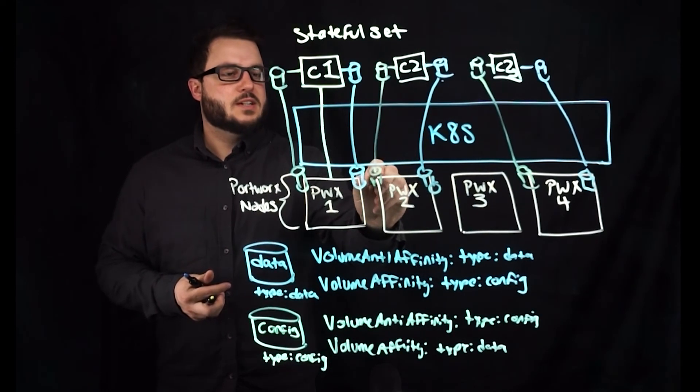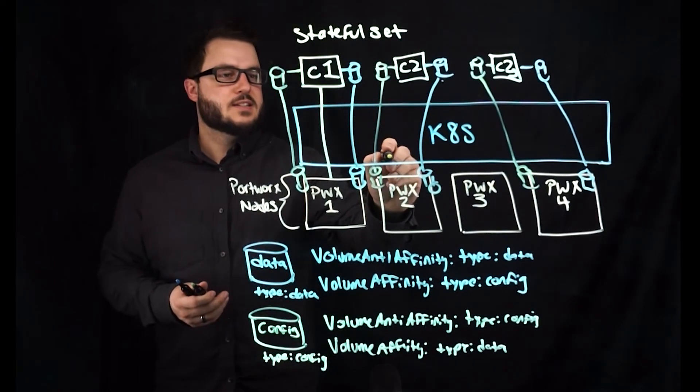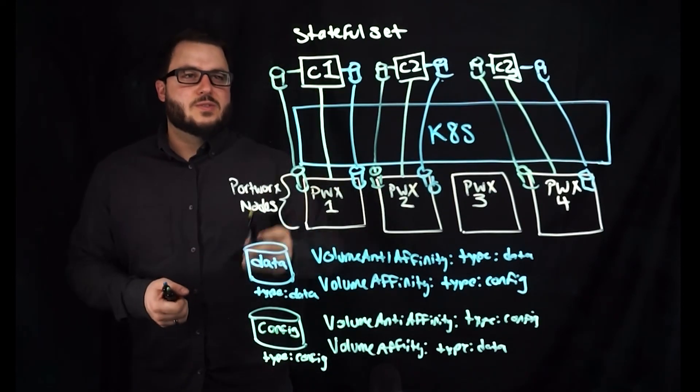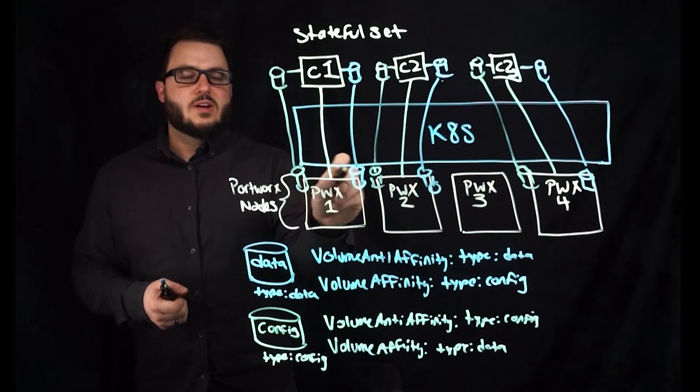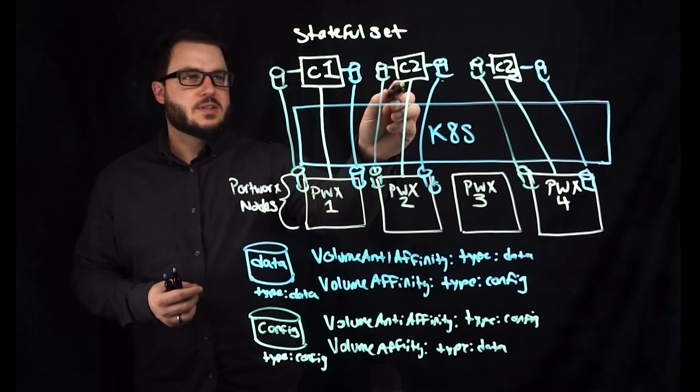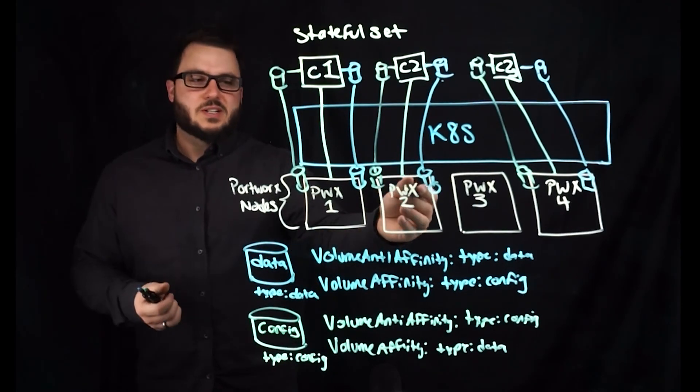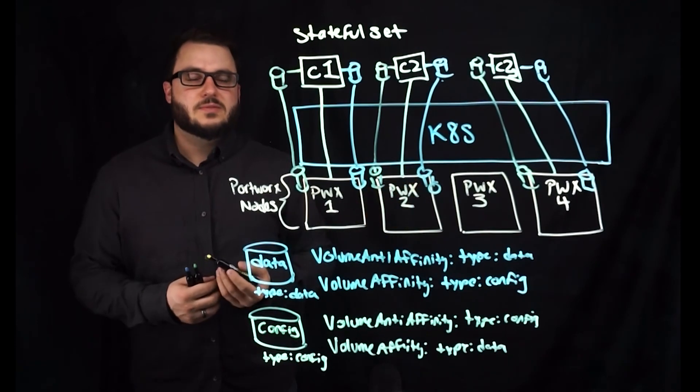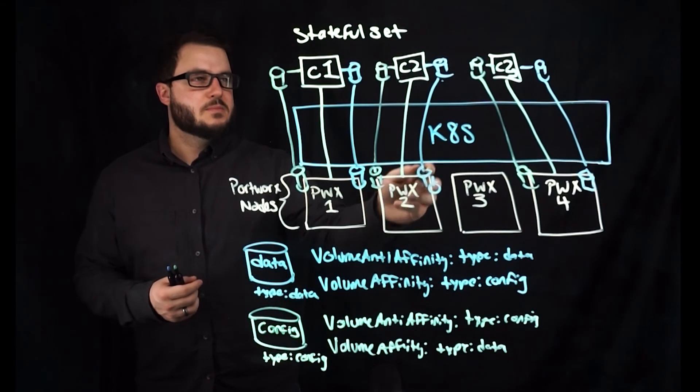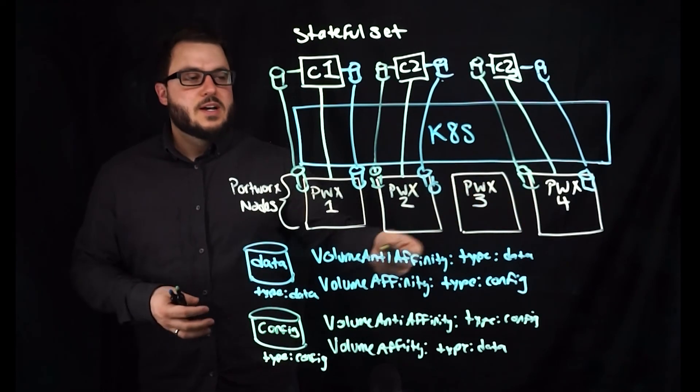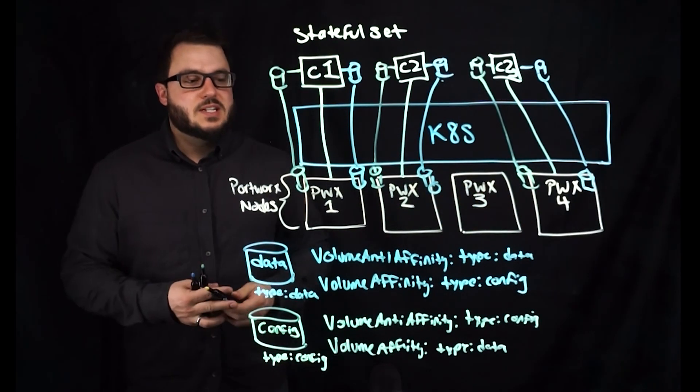And that's depicted with these lines. You can see that Cassandra node one lands on Portworx node one along with its configuration data volume. Cassandra node two lands on Portworx node two, these are also Kubernetes workers, along with its configuration volume and data volume. And Cassandra node three lands on Portworx node four along with this configuration and data volume.